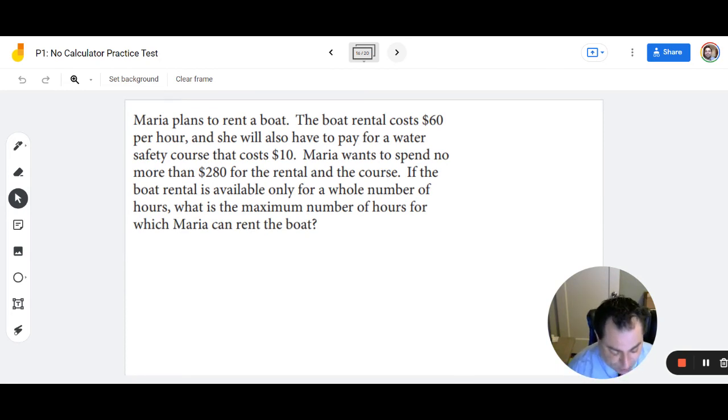Number 16. Maria plans to rent a boat. The boat rental costs $60 per hour, and she will also have to pay a water safety course that costs $10. Maria wants to spend no more than $280 for the rental and the course. If the boat rental is available only for a whole number of hours, what is the maximum number of hours which Maria can rent the boat? So some key terms here, per hour, 60 per hour is going to be 60x. It looks like she has to pay for a course that's $10, and she wants to pay no more than $280. So this has to be less than or equal to $280.